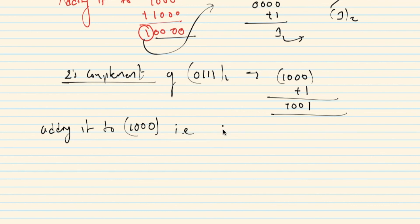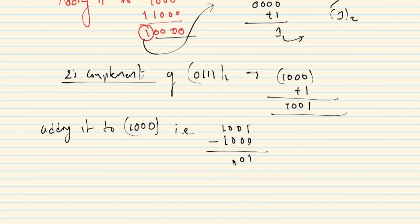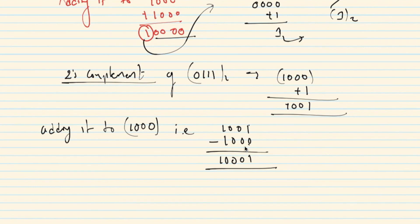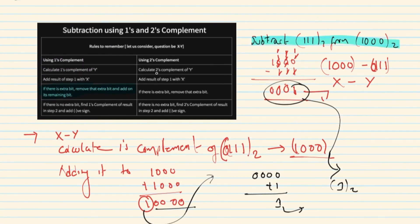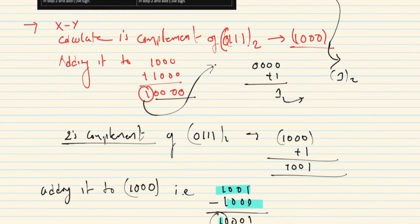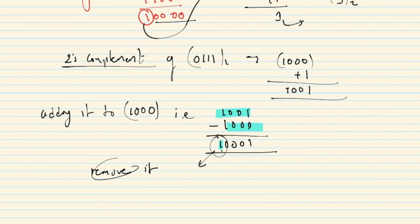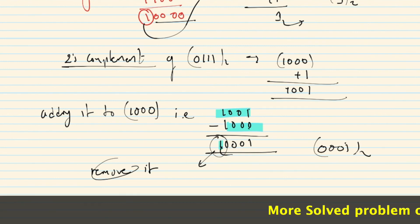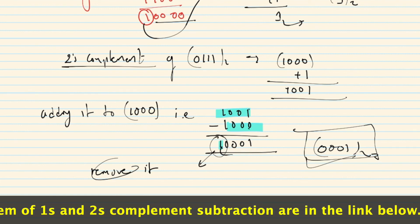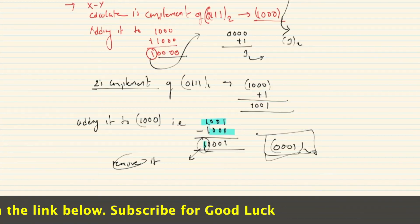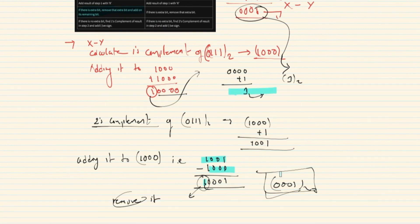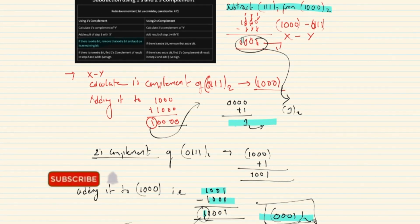We add x which is 1 0 0 0 to the two's complement of y. Since there is an extra bit, remove it. The remaining answer is 0 0 0 1. You can use either one's complement or two's complement method.